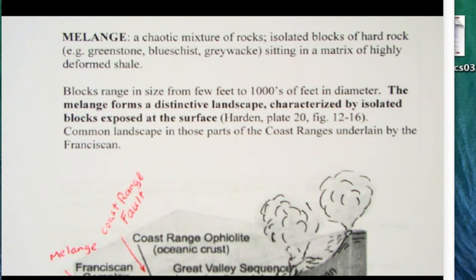The blocks range in size from a few feet to a thousand feet in diameter. They're exotic - each individual block represents parts of different parts of the oceanic plate. The melange forms a distinctive landscape characterized by these isolated blocks exposed at the surface.